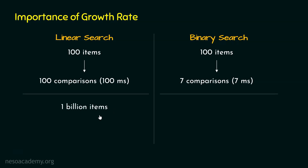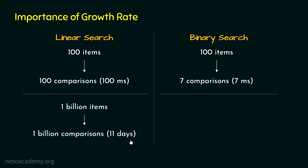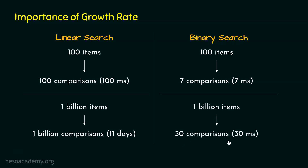Let's take 1 billion items. In case of linear search, we need 1 billion comparisons, which means linear search will take 11 days to come to the conclusion — 11 days! What about binary search? In case of binary search, if we have 1 billion items, it needs just 30 comparisons to come to the conclusion.